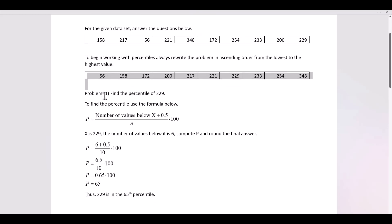Problem one states, find the percentile of 229. Whenever we have to find a percentile, we apply this formula. P is equal to the number of values below X, X is simply the data value, plus 0.5 divided by N. N is the number of data values, and then times 100.